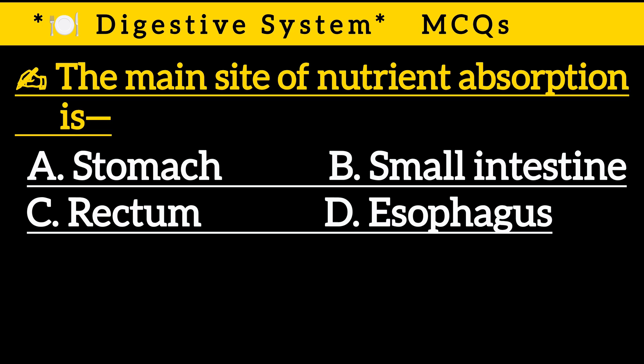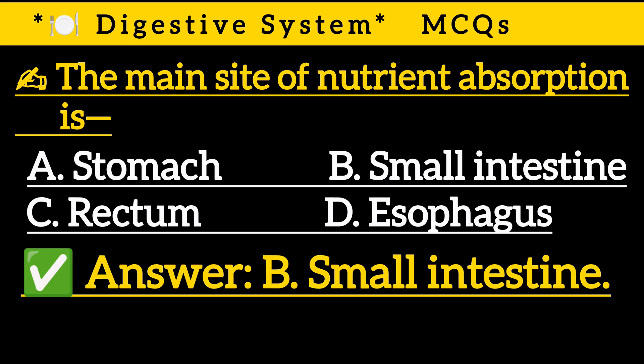Question 9: The main site of nutrient absorption is — Option A: Stomach, Option B: Small intestine, Option C: Rectum, Option D: Esophagus. Correct answer is Option B: Small intestine.